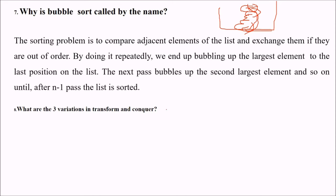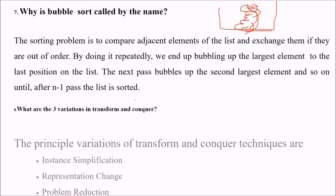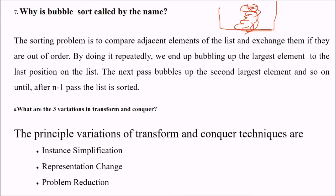What are the three variations in transform and conquer? Transform and conquer means there are various variations, the principal variation of transform and conquer techniques. For example, we have instance simplification, we can have representation change and problem reduction.